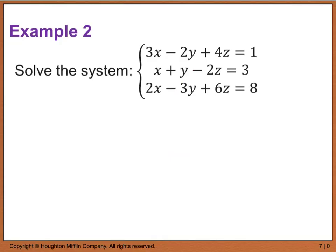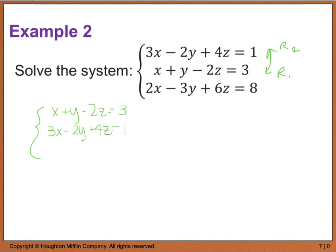Example 2: solve the system where we have 3x minus 2y plus 4z equals 1. I notice right away that the second equation has a coefficient of 1 on x, so I'll swap rows — r2 becomes first — and rewrite the system as: x plus y minus 2z equals 3, then 3x minus 2y plus 4z equals 1, and 2x minus 3y plus 6z equals 8.